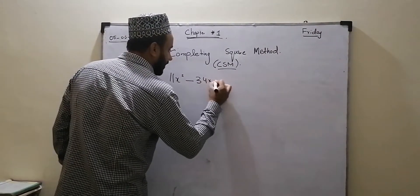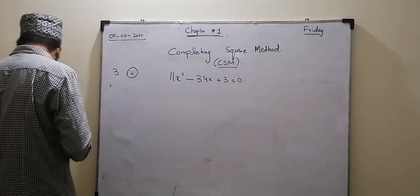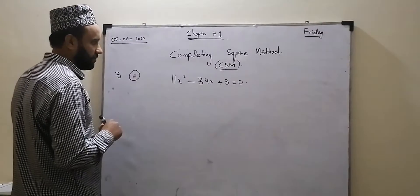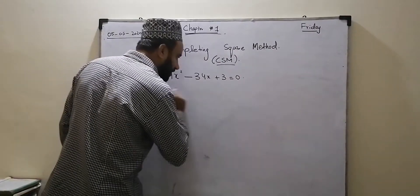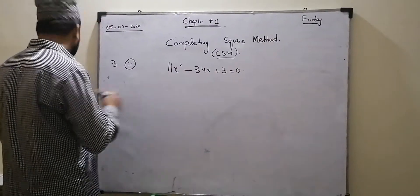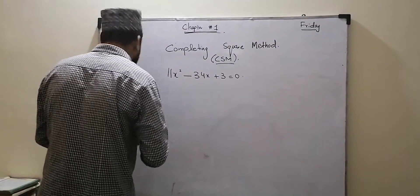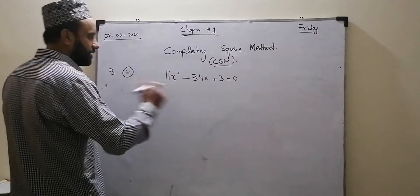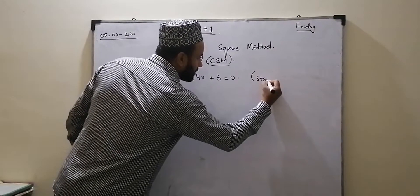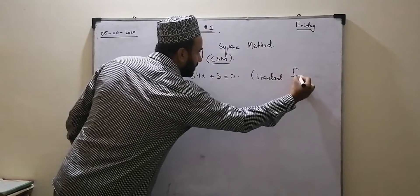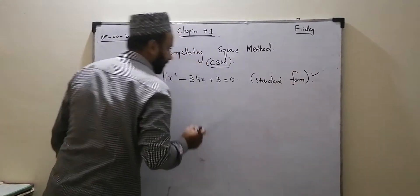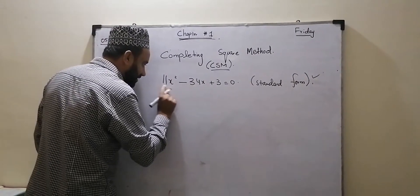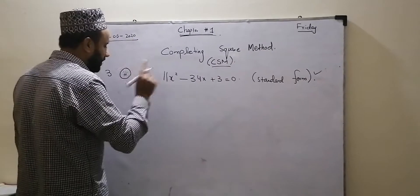The first rule is to convert it into Standard Form. So this question is in Standard Form. The second rule means that the coefficient of x² should be 1. It is 11, not 1.